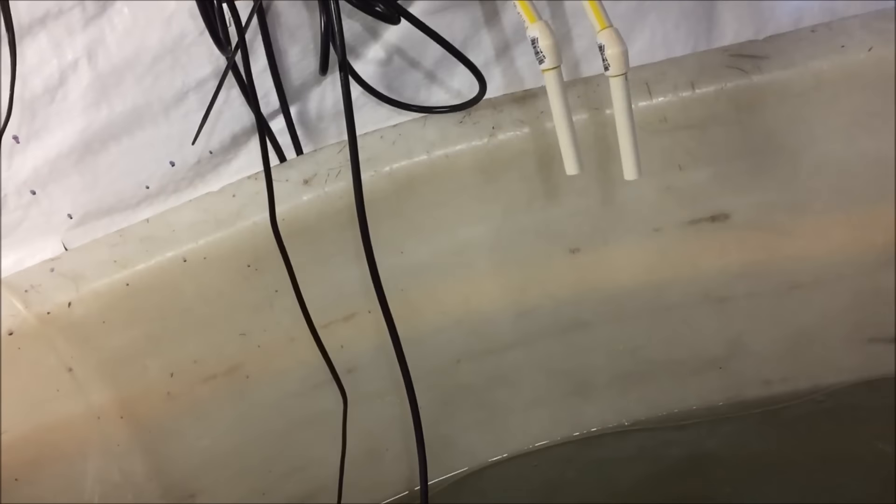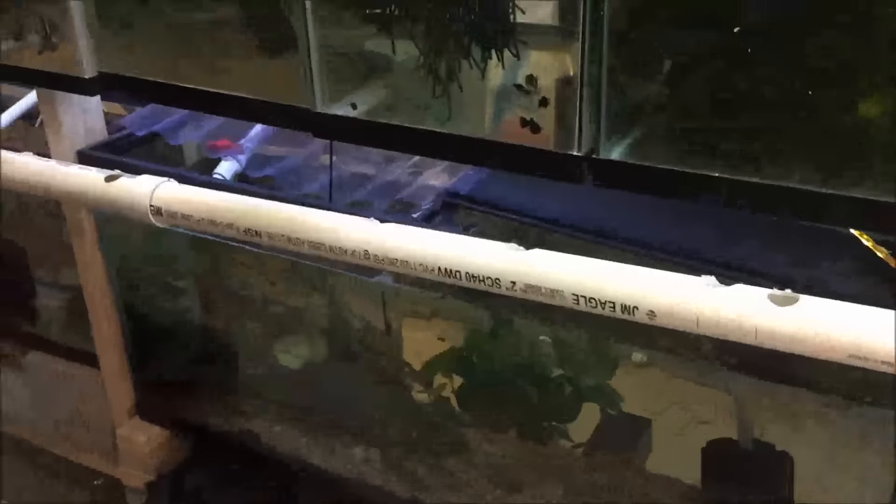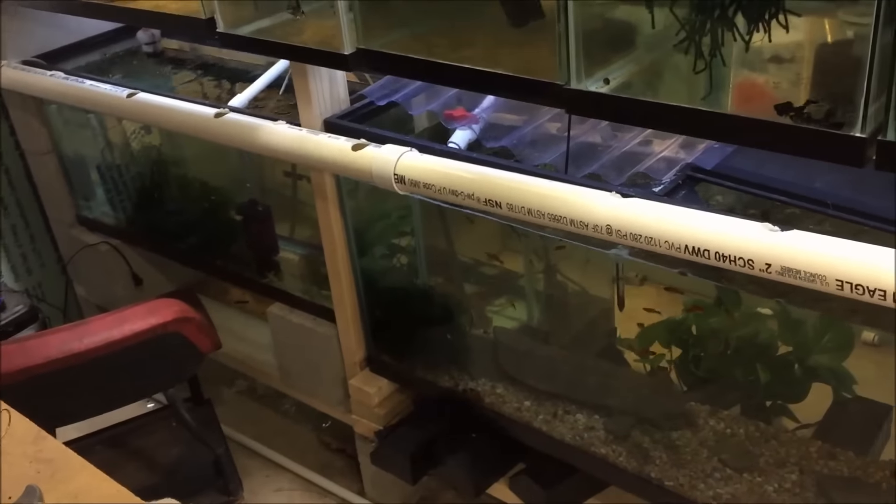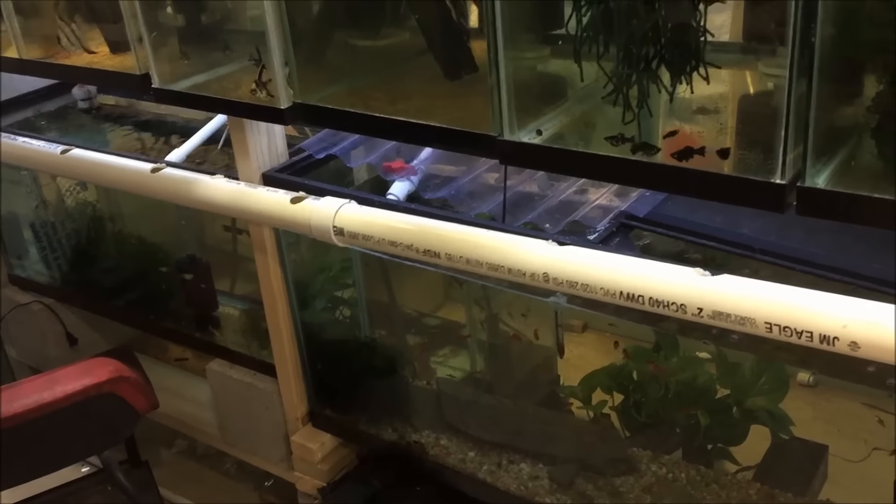The auto water change system is just about done with its cycle. I have everything with the drip emitter on for one hour, so the tanks are getting, the tanks with the one gallon emitters are getting a one gallon per day change. Let me show you what I did back here.